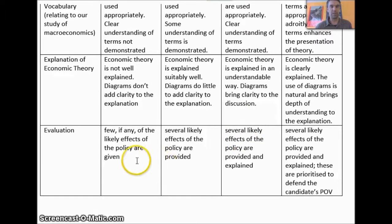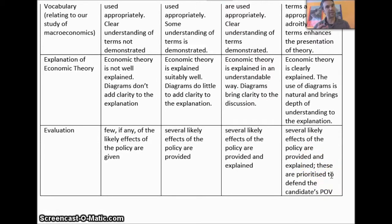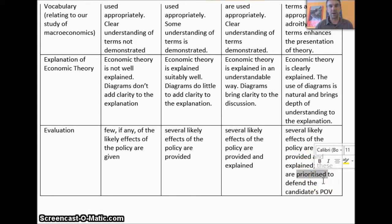Finally, for evaluation, you need to talk about several likely effects — and really from both sides of the table. You need to be able to say: I'm going to do this, and it's going to have these good effects and these bad effects, but here's why the bad effects aren't as important. That's what I mean by prioritizing the arguments. To get all the way to excellent and earn the highest marks, that's what I need to see.